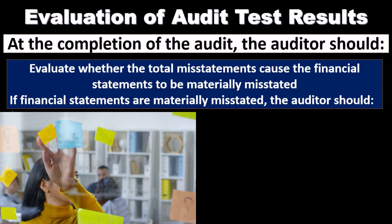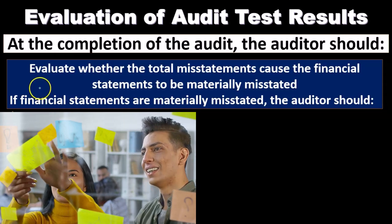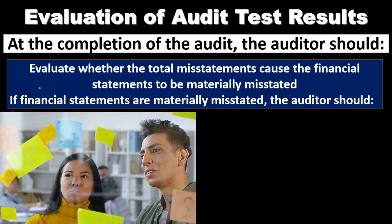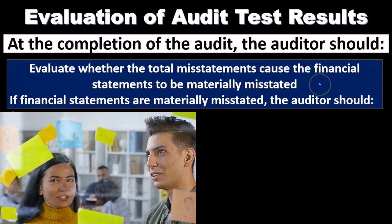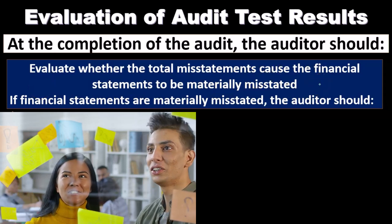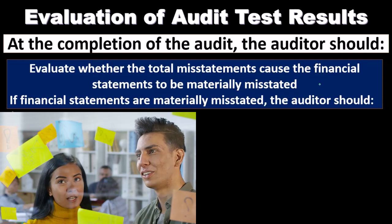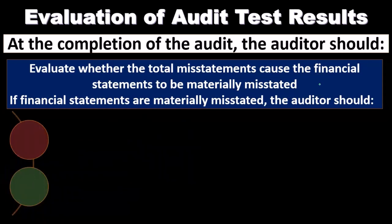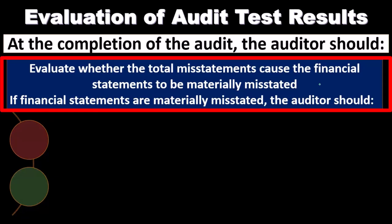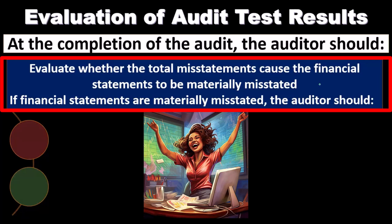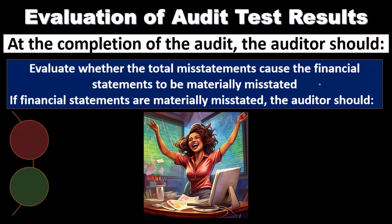At the end of the audit process, we evaluate whether the total misstatements cause the financial statements to be materially misstated. We're considering the potential misstatements identified throughout the auditing process. Taking the financial statements as a whole — if we add together all the misstatements found at the assertion level, would they add up to a material misstatement at the overall financial statement level?